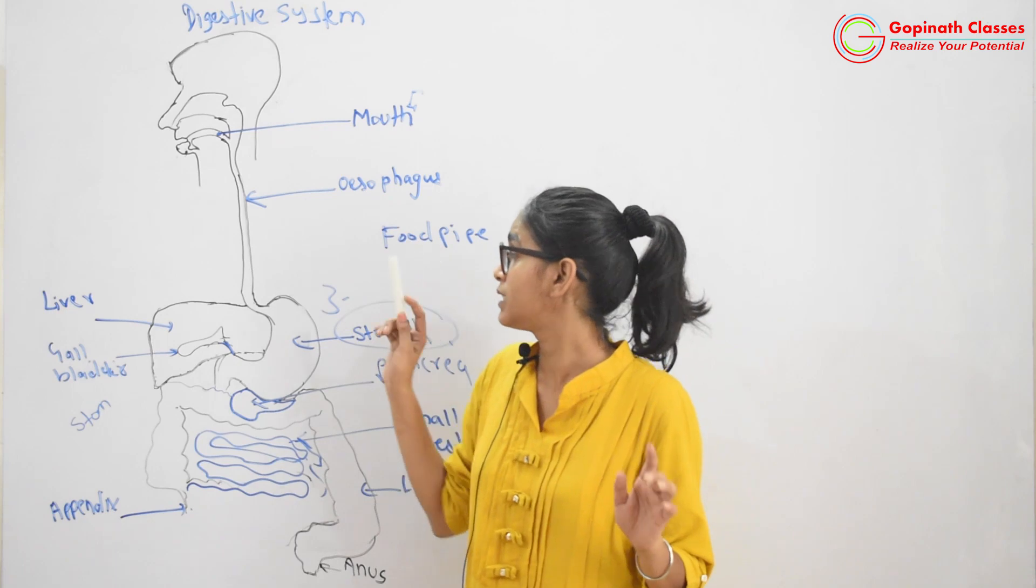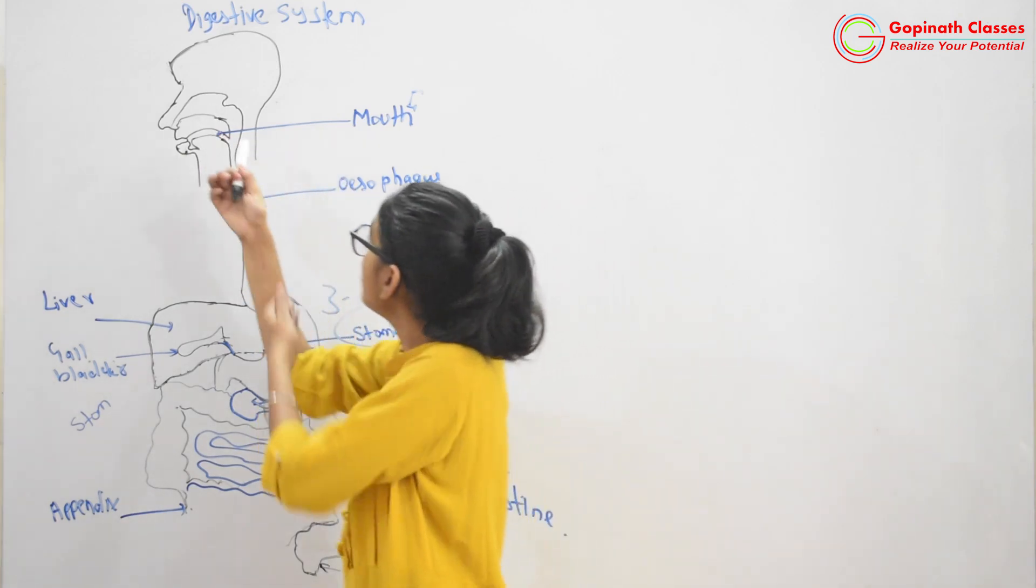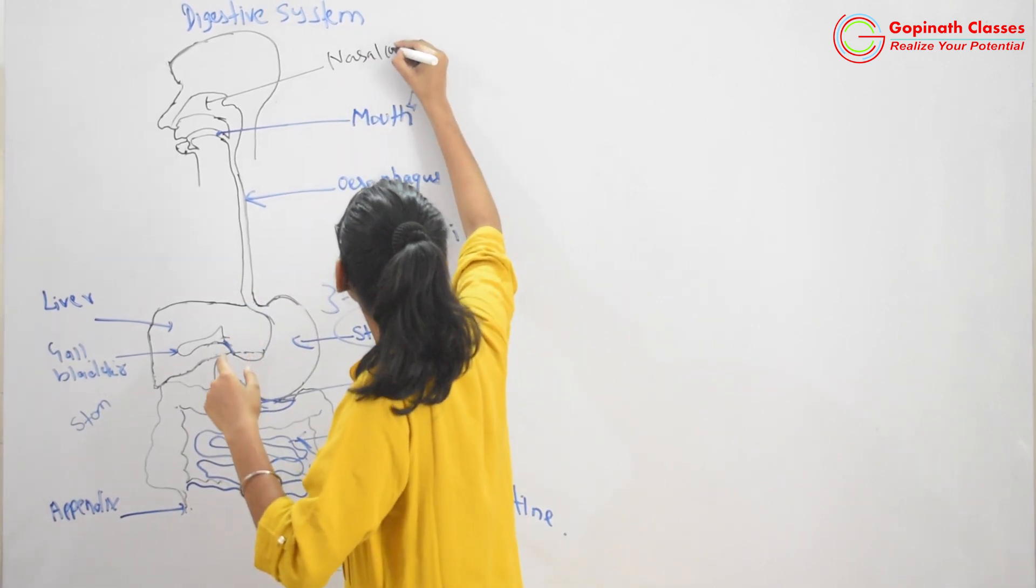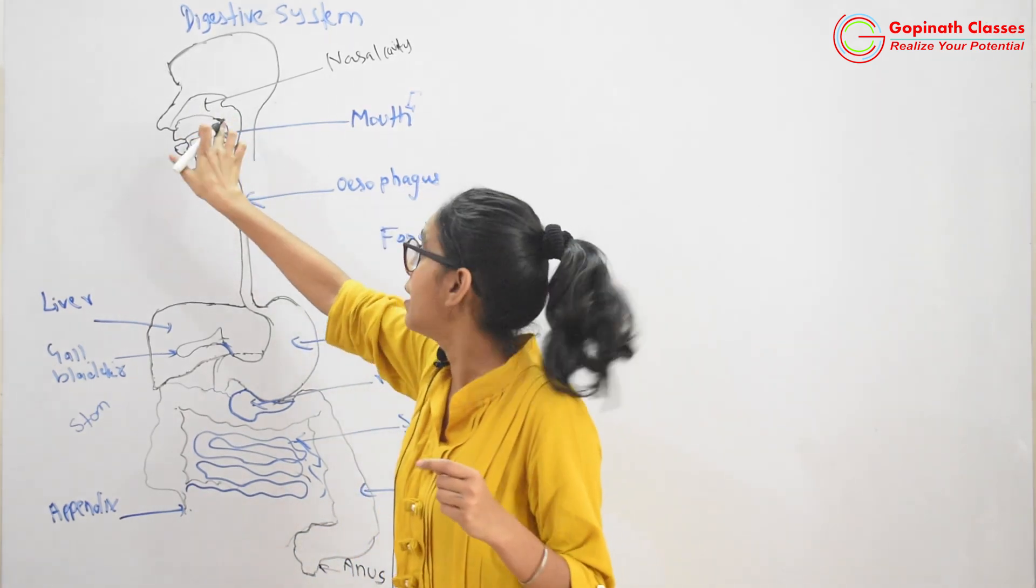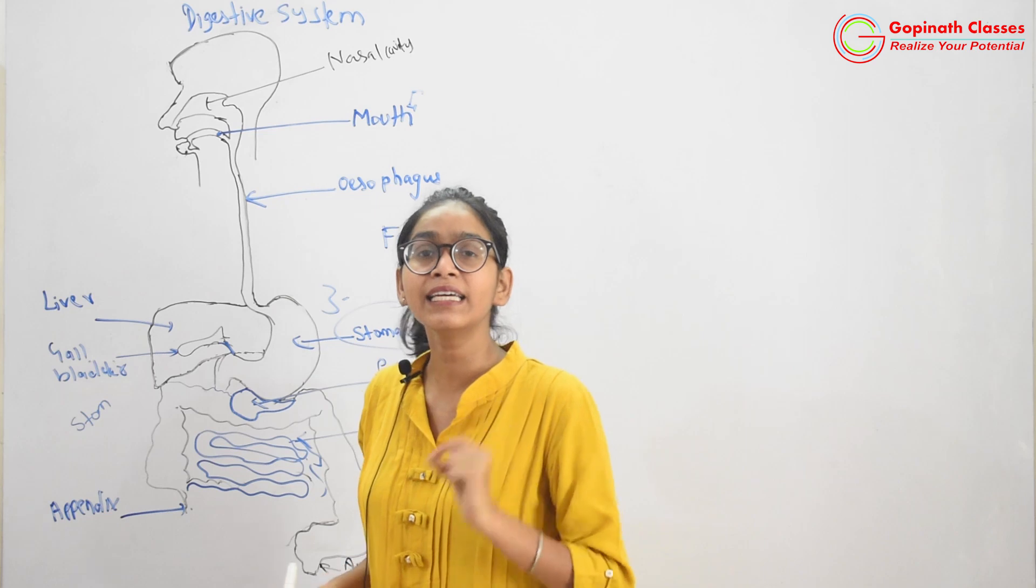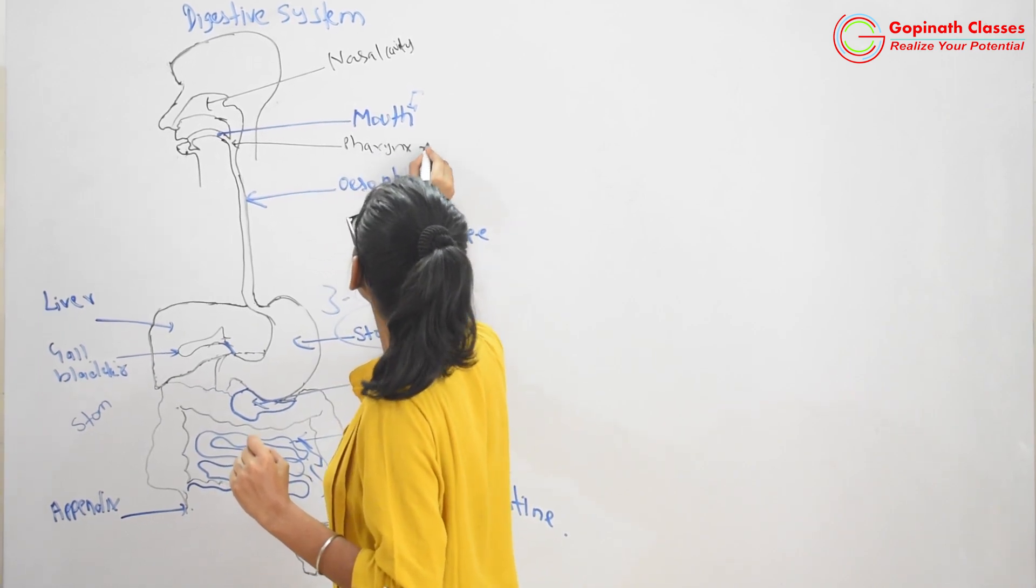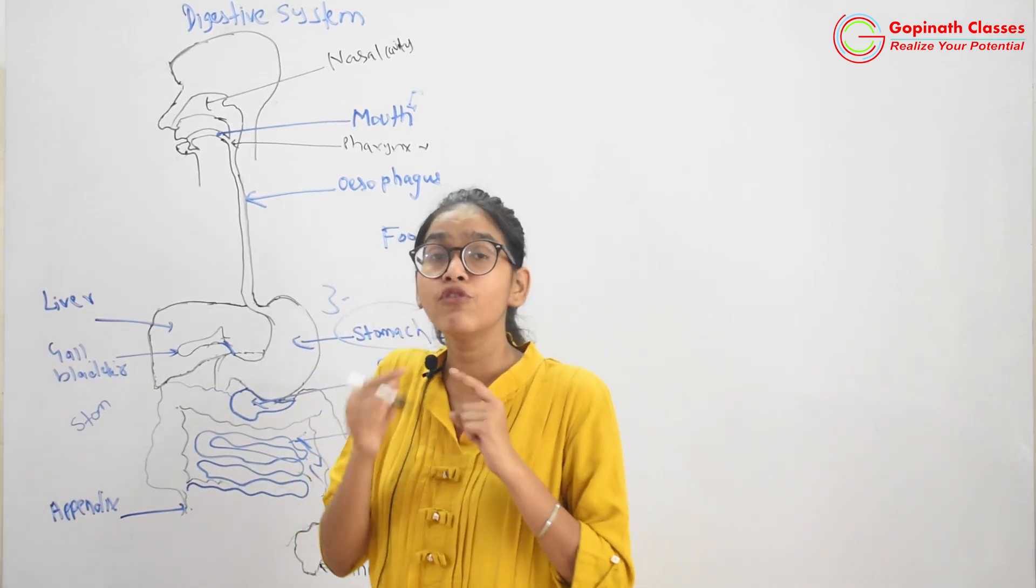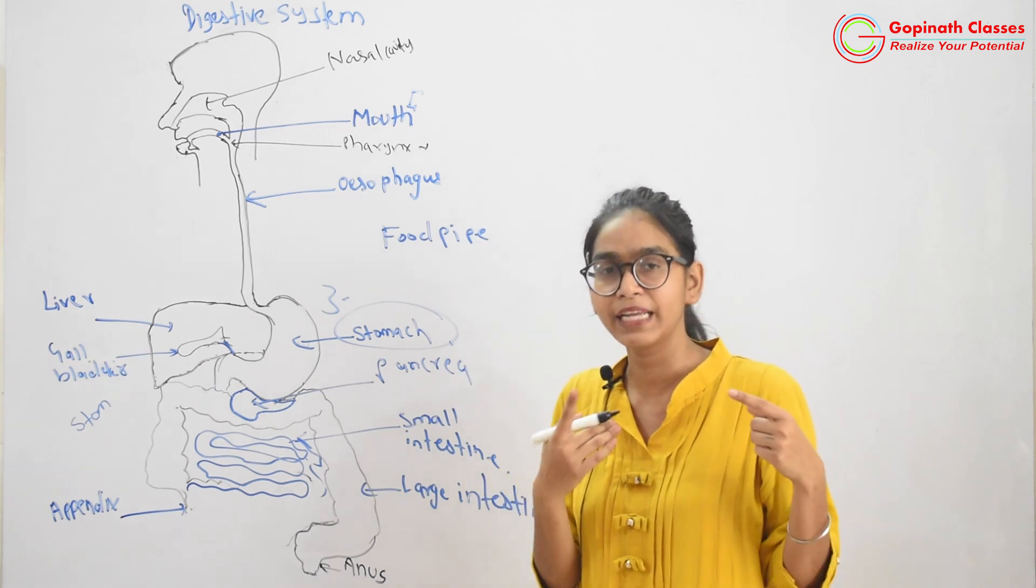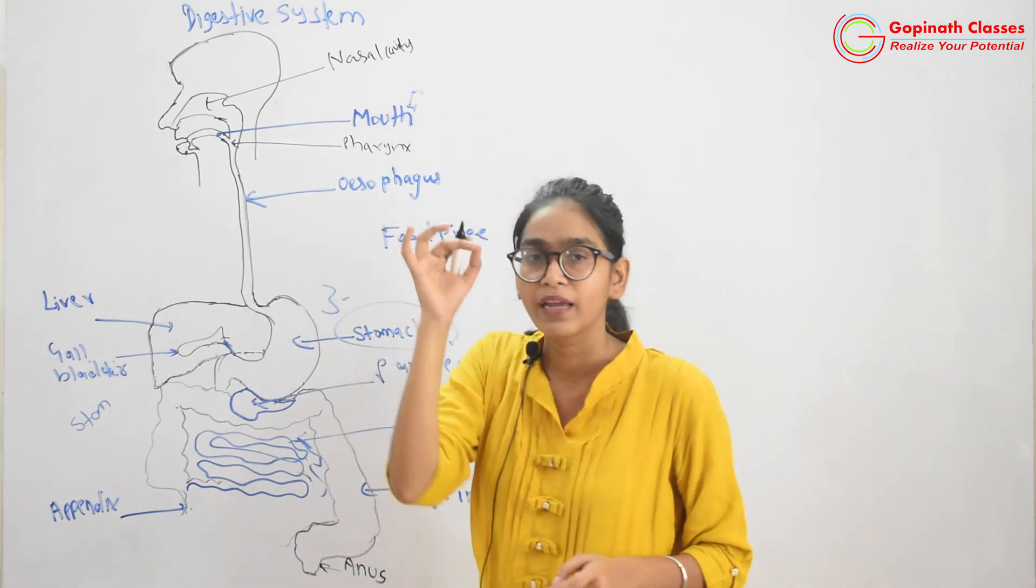Now the second organ is esophagus. But before going to that, I will tell you a very important point. This is our mouth. This is the nasal cavity. You are seeing that the nasal cavity is this part. And this part is going to die. And where it dies, it is called pharynx. What is pharynx? Common passage for both air and food. This is the place where air and food is common passage. After this, there is larynx and trachea, which we will study in breathing and exchange of gases. So pharynx is common passage for both air and food.